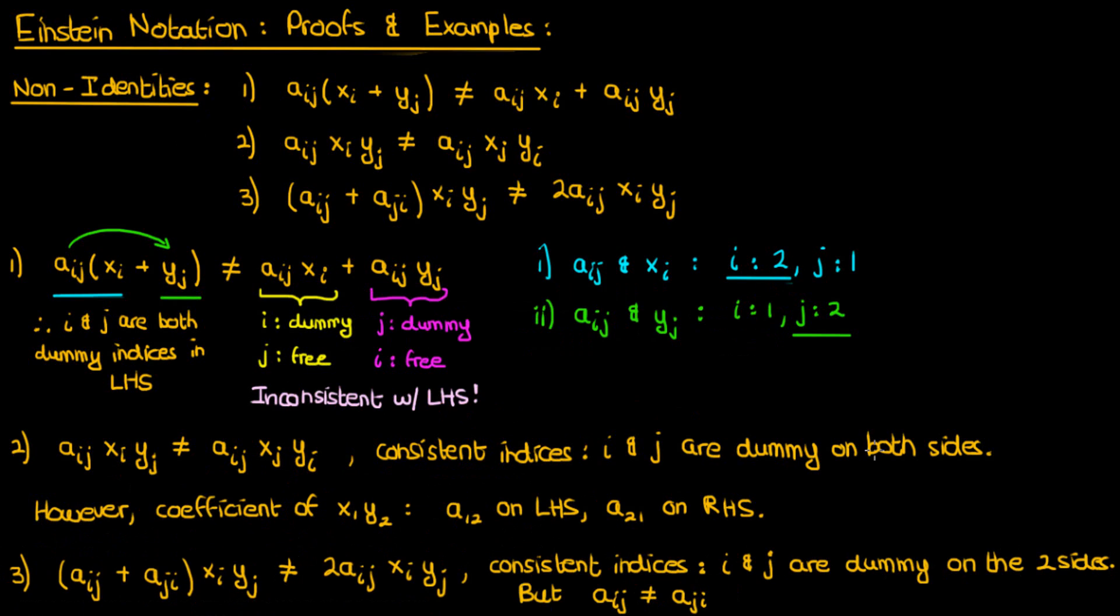you can't add them together to get 2 times aij, especially when you're multiplying that with two different variables with different indices when you're multiplying with xi and yj. Again, I encourage you to write out all the terms on both sides to verify that this is true.